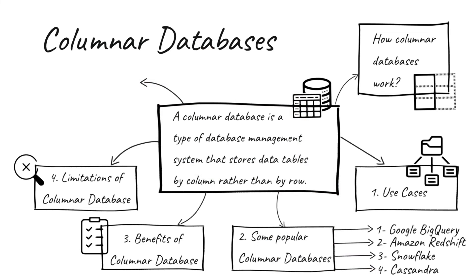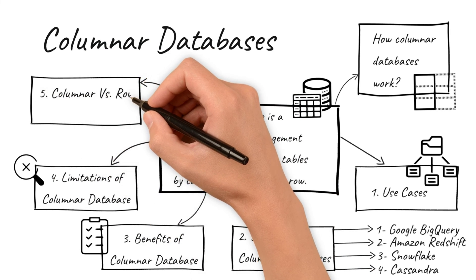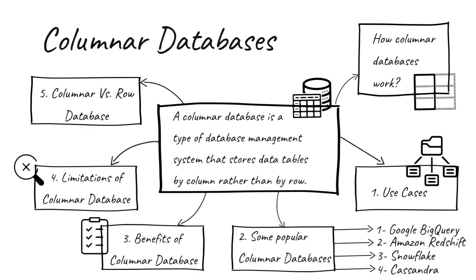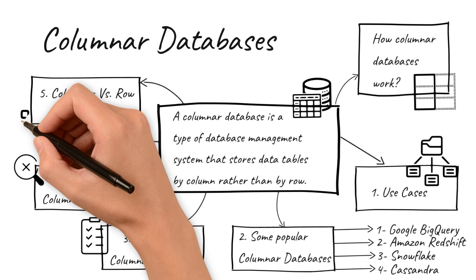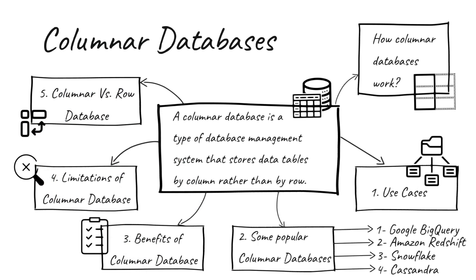Columnar vs row stores: The compression in columnar databases is high, while it is moderate in row stores. The query speed of columnar databases is very fast for analytics, whereas in row stores the query speed is fast for transactions. Updates are slow in columnar databases, whereas these are very fast in row stores.